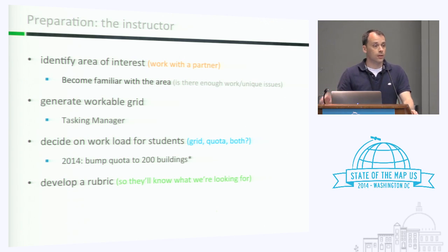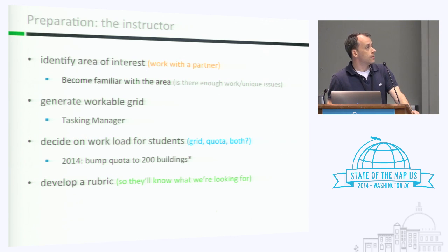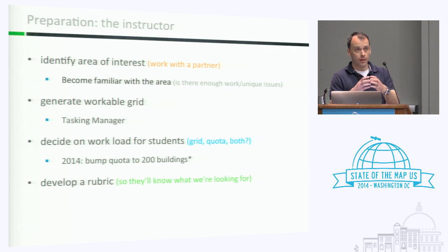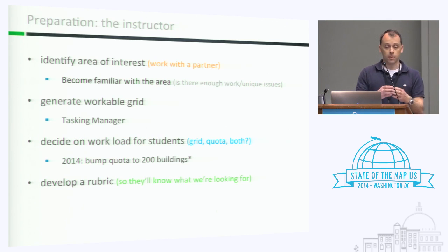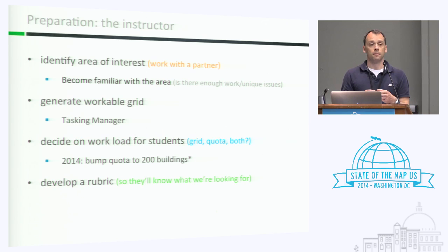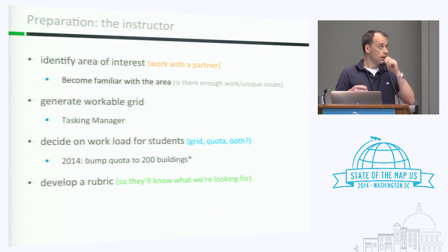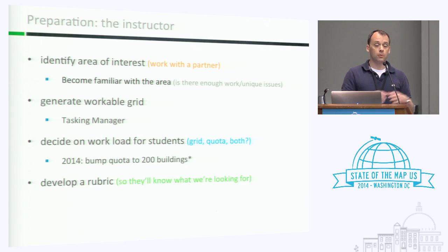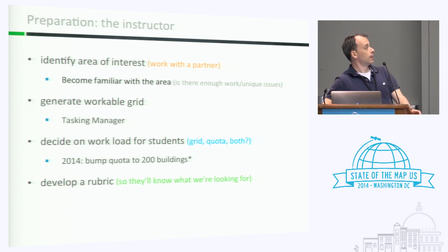You can do quota-based, grid-based, or both. You can assign students a particular tile in the Tasking Manager and say they're responsible for the entire cell. If they don't reach their quota after exhausting a cell, they move on to a neighboring cell. There are different ways to work it depending on how you want to approach it.